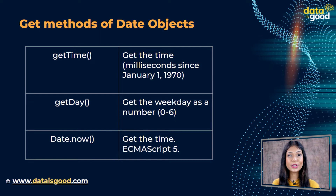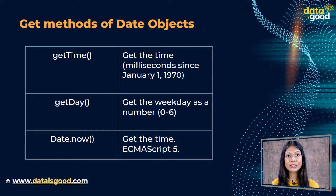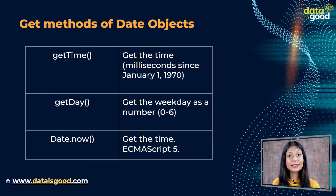getTime gets the time in milliseconds since January 1, 1970. getDay gets the weekday as a number from zero to six. Date.now gets the current time, introduced in ECMAScript 5. These are the few get methods — let us see how we can implement them in a program.